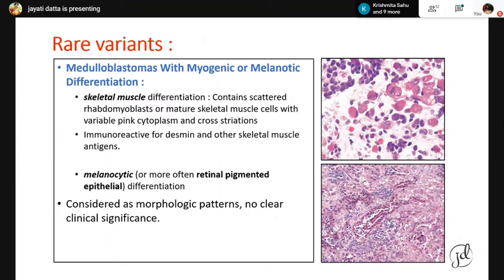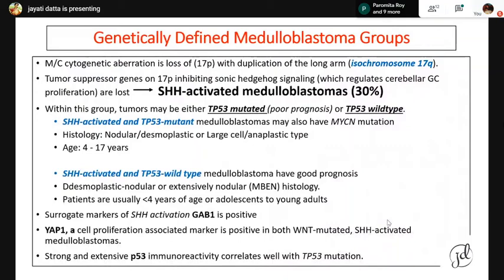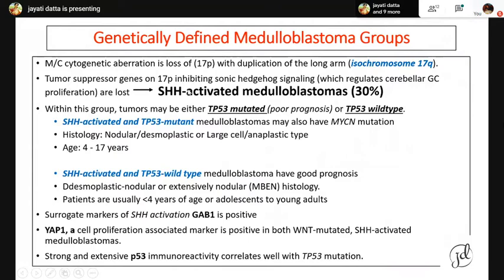These are mere morphologic variants with no clear clinical significance attached, but you should be aware of them for diagnosis. Coming to genetically defined medulloblastoma, there are four genetic subgroups: sonic hedgehog (SHH) activated, WNT pathway activated, and non-WNT/non-SHH which is further subclassified into group 3 and group 4. The SHH-activated medulloblastoma, forming about one-third of cases, involves loss of the short arm of chromosome 17 with duplication of the long arm, forming isochromosome 17q. The tumor suppressor genes on 17p that inhibit SHH signaling are lost, disrupting cerebellar granular cell layer proliferation regulation.